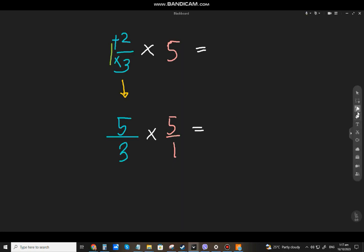So since you changed it, 5 times 5, that will be 25. Then, 3 times 1, that will be 3. So, just copy it, this is already the answer. 25 over 3.